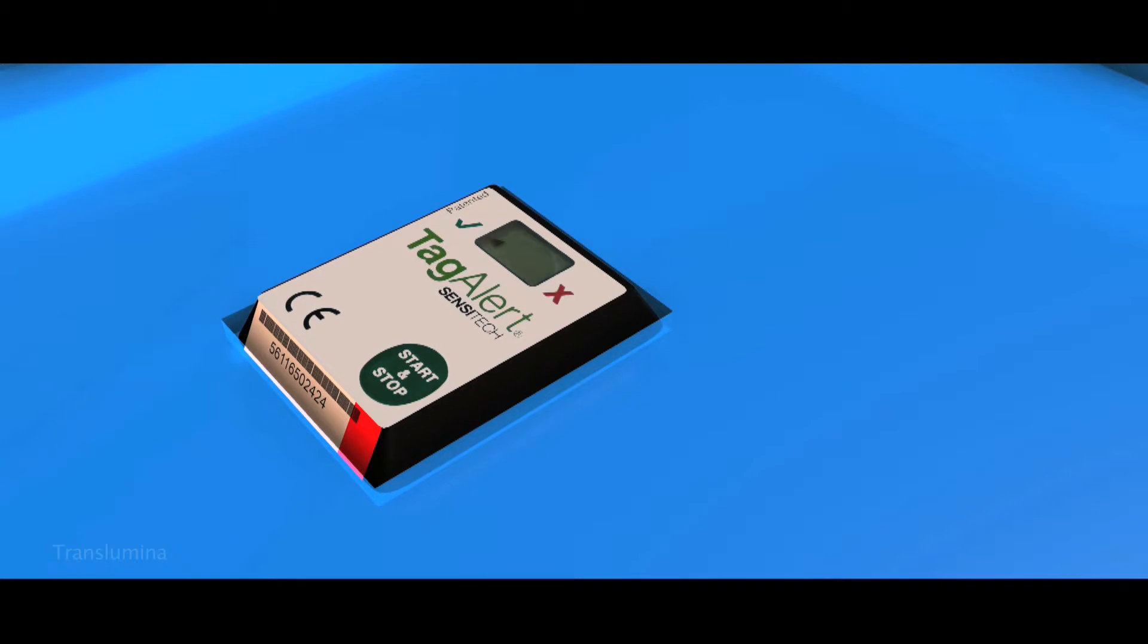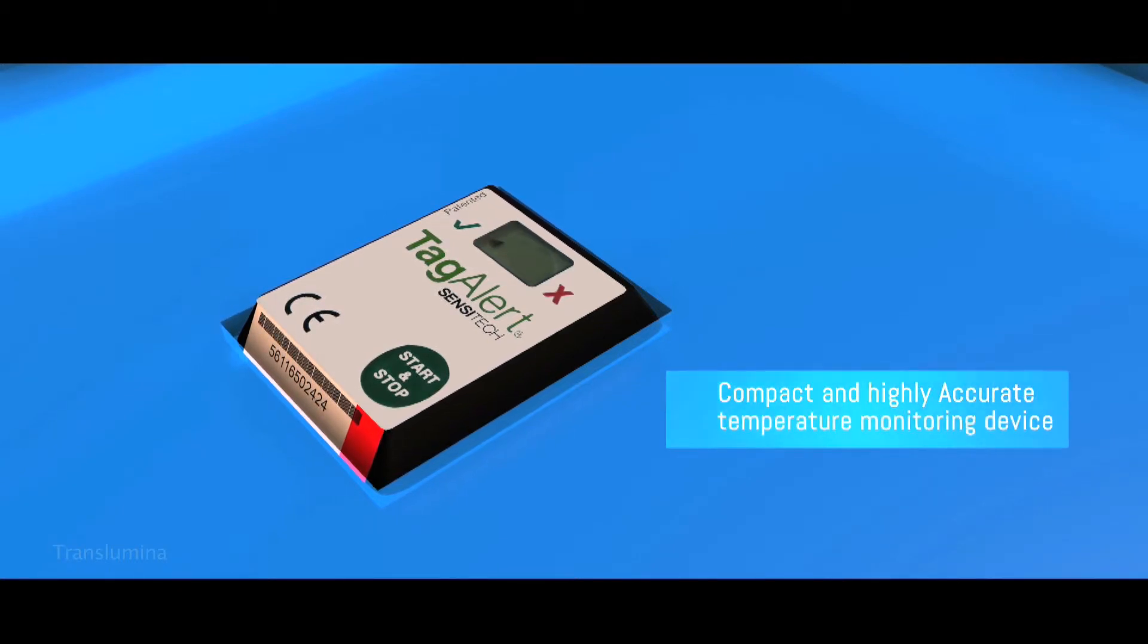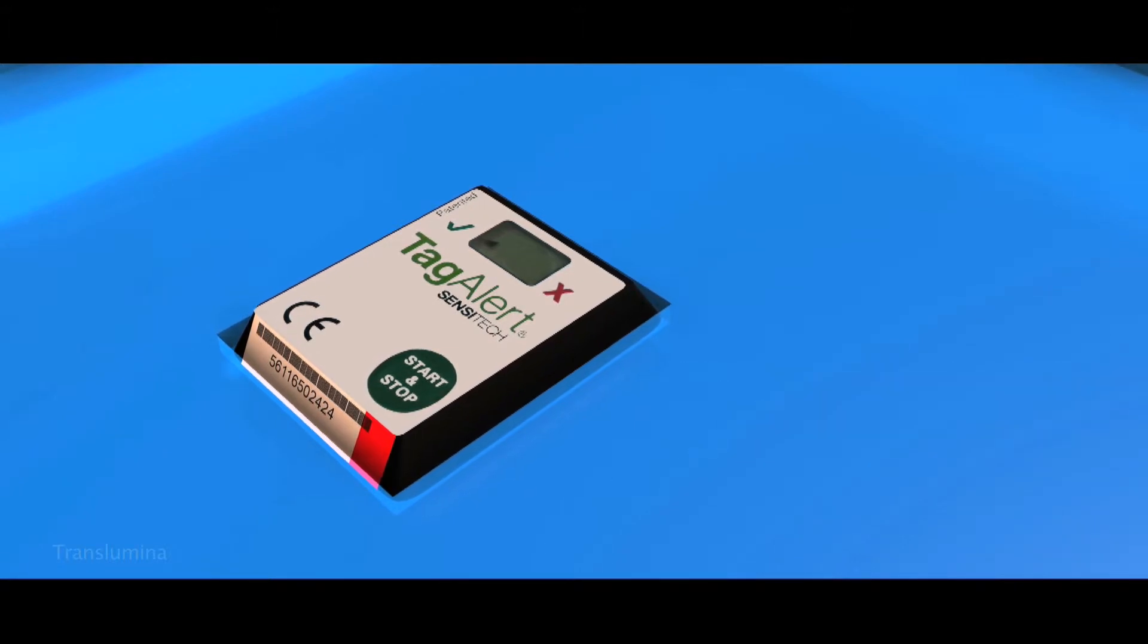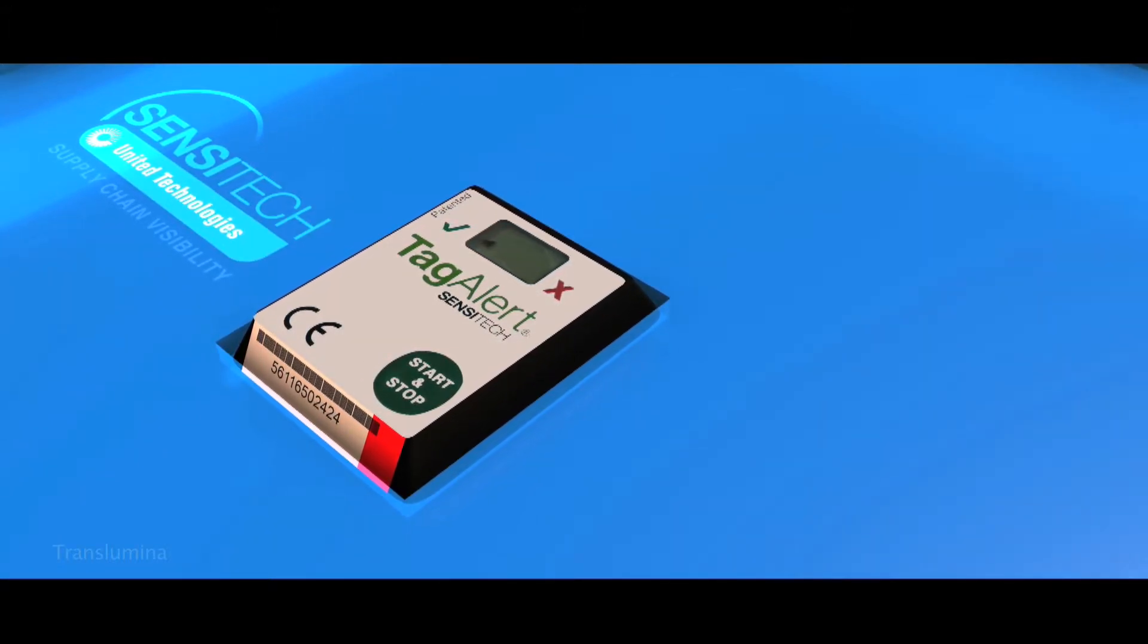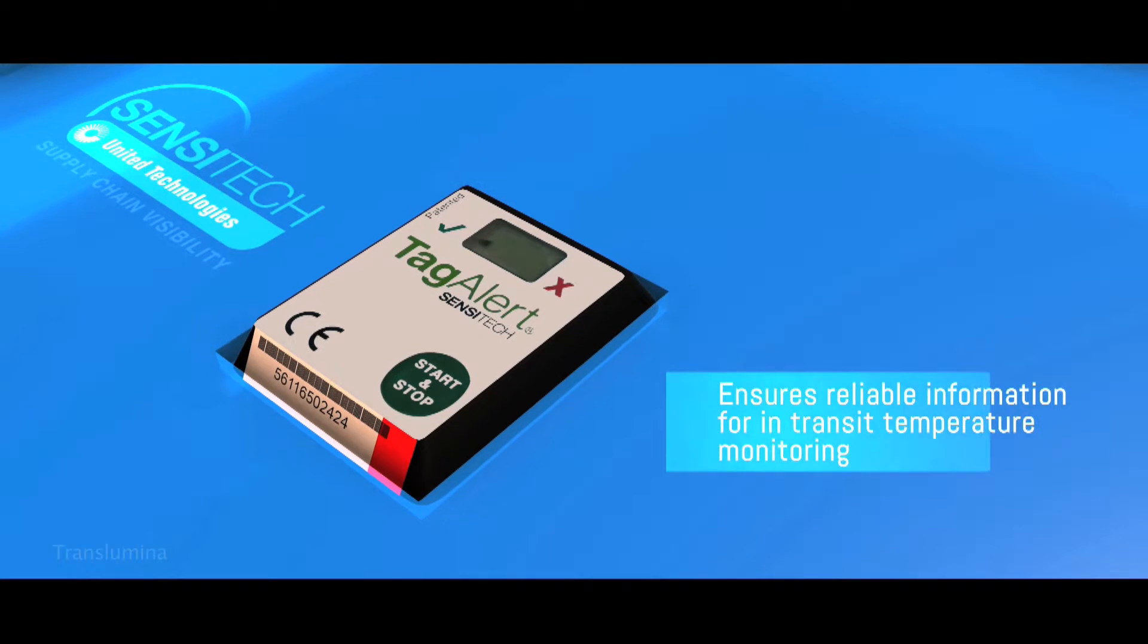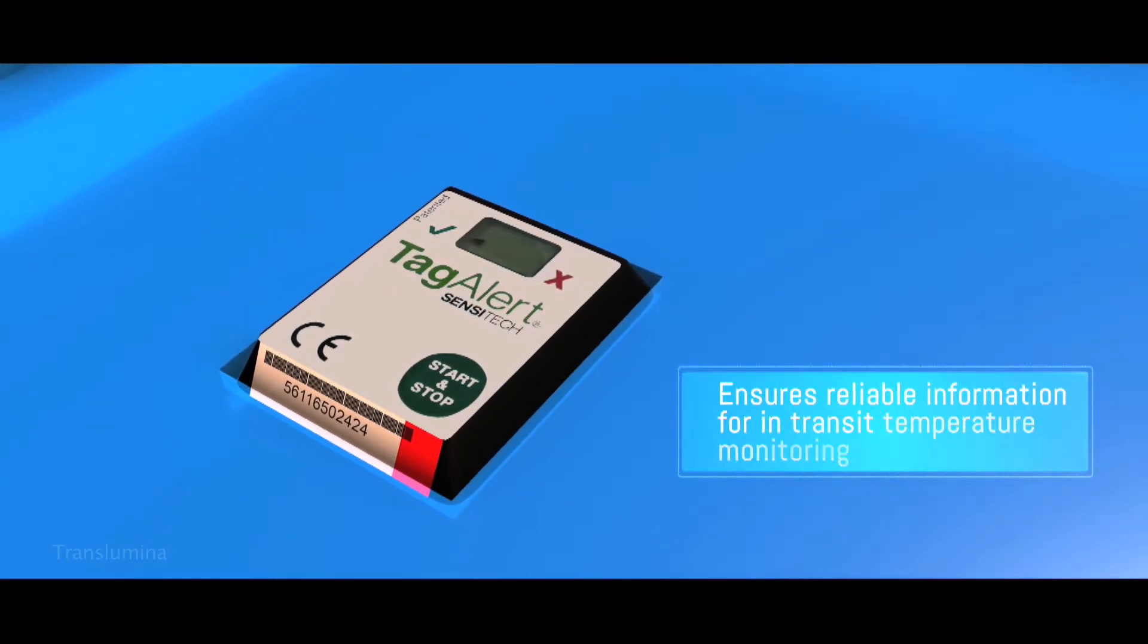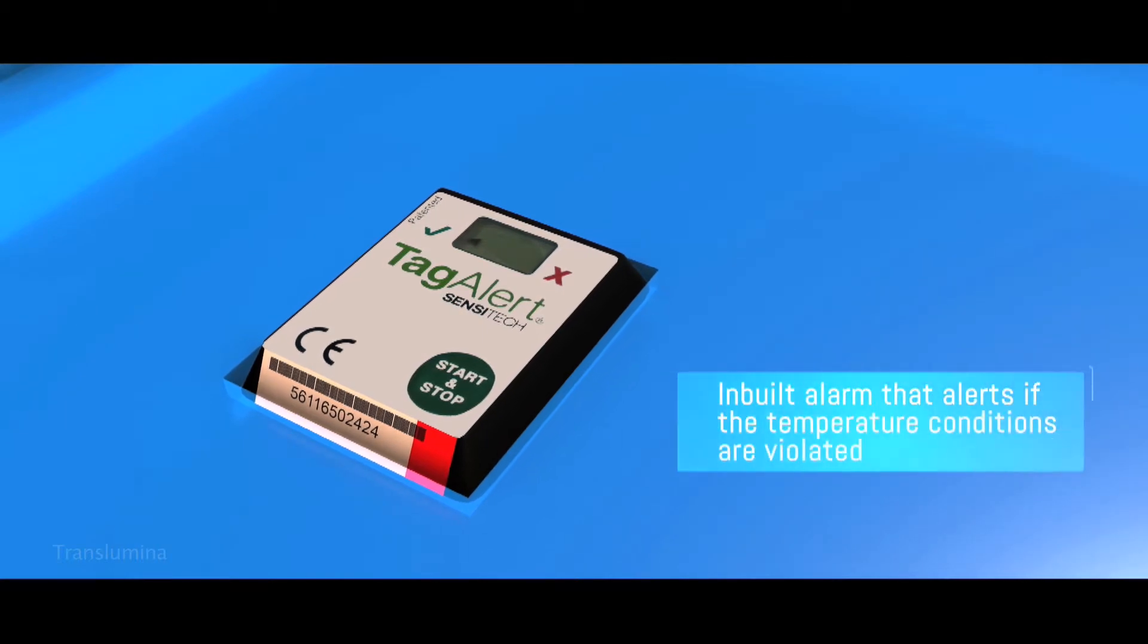The packaging is monitored with a compact, highly accurate temperature monitoring device Tag Alert developed by Sensitec USA. While Tag Alert ensures reliable information, ideal for a variety of in-transit temperature variations with specific alarm conditions.